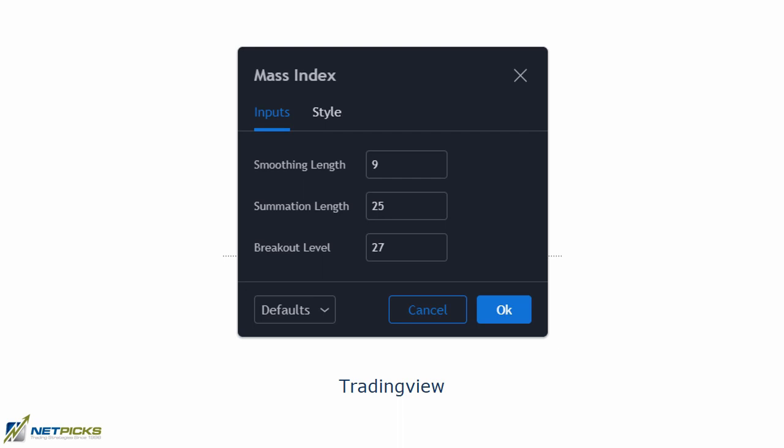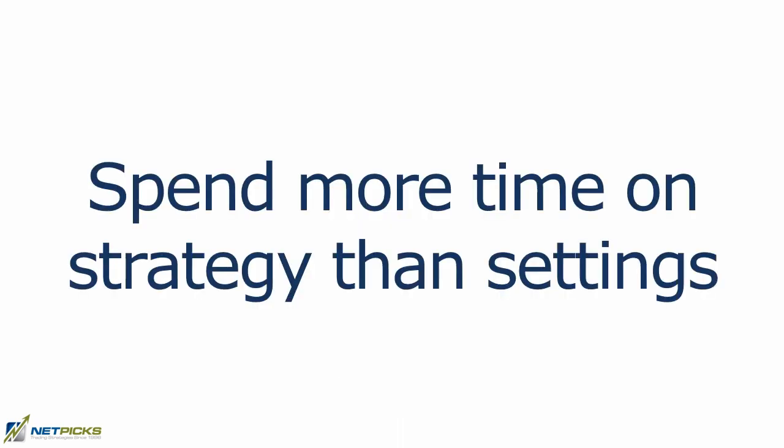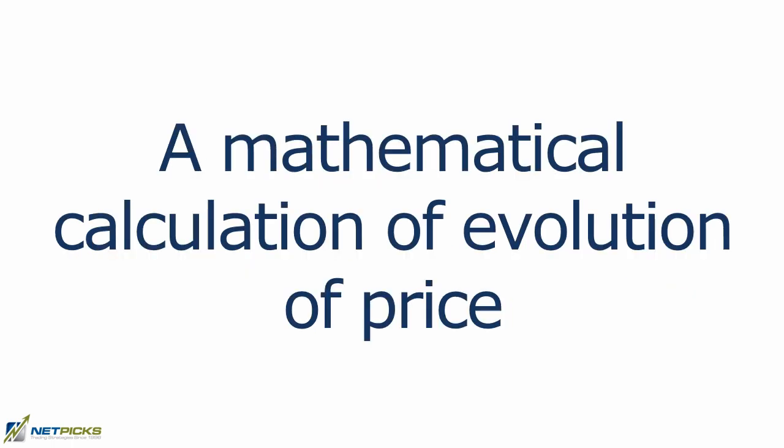As with most indicators, you can adjust the settings of the Mass Index. When facing low-volatility market conditions, you may want to adjust the settings to make quicker movements — though I generally do not adjust the default settings of an indicator. You may also consider adjusting if you're trading a short-term approach on a 15-minute, 10-minute, or 5-minute chart. But if you look for that perfect setting, that can take you down the rabbit hole — you're wasting time looking for a magic input when you should be working your strategy.